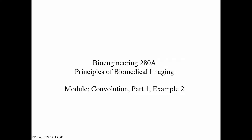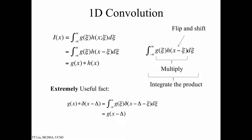In this module we're going to do another example of convolution in one dimension. We're going to look at how to apply the flip and shift algorithm. Recall from the definition of convolution: we take one function and flip and shift it, where the shift is a function of the output variable x. Then we multiply it by the other function and integrate that product.